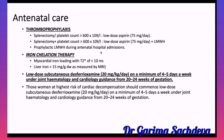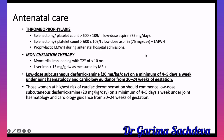Thromboprophylaxis is a very important and frequently examined topic in thalassemia. If the patient has had a splenectomy OR has a platelet count greater than 600,000, give low-dose aspirin from 12 weeks. If the patient is both splenectomized AND has a platelet count greater than 600,000, give both low-dose aspirin and low molecular weight heparin (LMWH). For hospital admissions, give prophylactic LMWH.